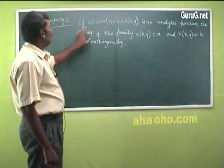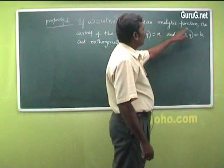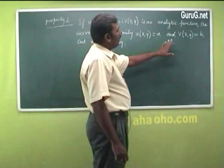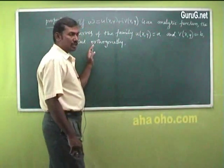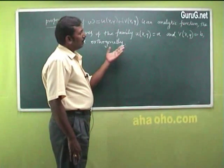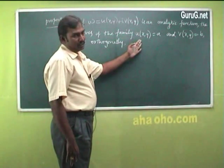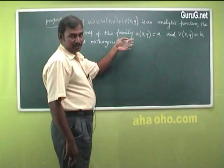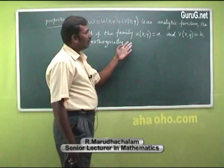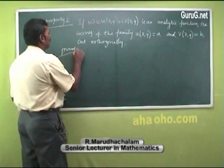Next property: if w = u(x,y) + iv(x,y) is an analytic function, then the curves of the family u(x,y) = a and v(x,y) = b cut orthogonally. When two curves cut orthogonally, at the point of intersection their tangents are perpendicular — that is, the product of the slopes is −1. We have to prove this.